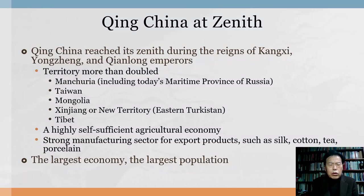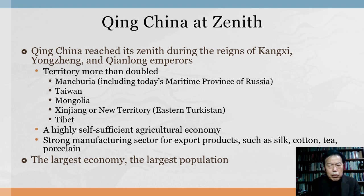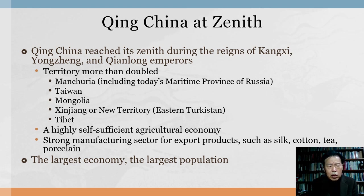Qing China reached its zenith during the reigns of three emperors: Kangxi, Yongzheng, and Qianlong. First of all, China's territory more than doubled. Manchuria, the abode of the Manchus, was added. Taiwan was also conquered and incorporated. Mongolia was conquered, and the eastern part of Turkestan was conquered and incorporated as Xinjiang, or New Territory. Tibet was also subjugated.